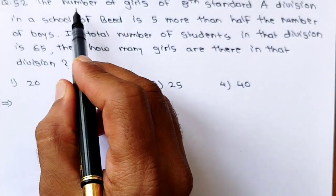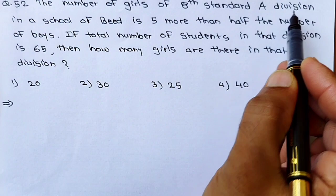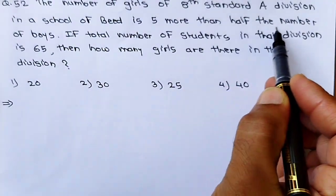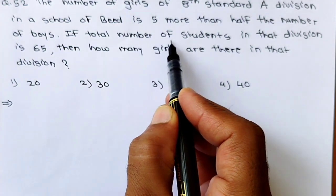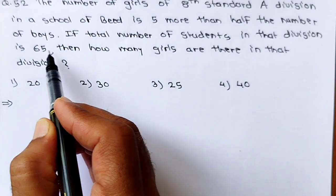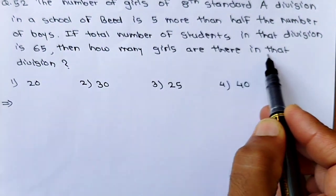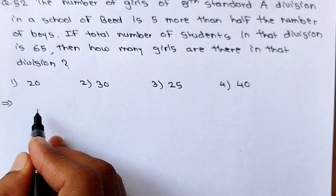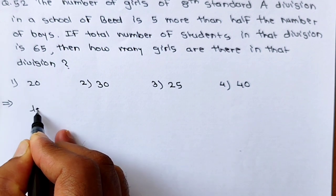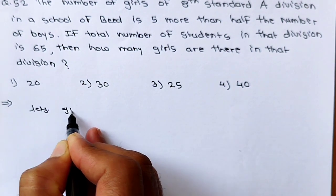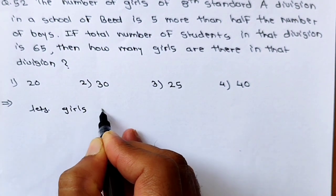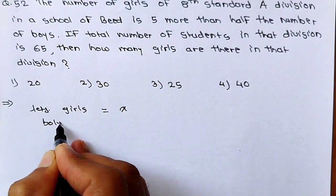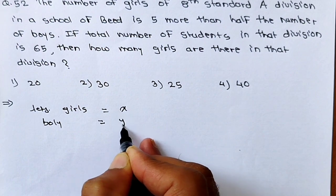Question number 52: The number of girls of 8th standard A division in a school is 5 more than half the number of boys. If the total number of students in that division is 65, then how many girls are there in that division? To solve such questions, we make assumptions: let girls = X and boys = Y.